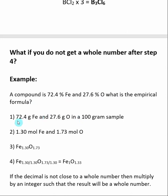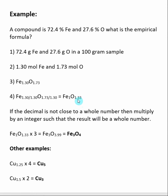Jumping through the steps: we multiply by 100 to get the mass of each element in the 100-gram sample, then divide by atomic weight to get moles. This gives us a tentative empirical formula showing that for every 1.30 irons, we have 1.73 oxygens. We divide through by the lowest number, 1.30, and get a ratio of 1 iron to 1.33 oxygens. In this case, 1.33 is too far away from a whole number to safely round.